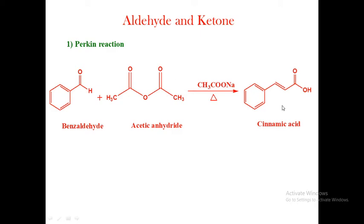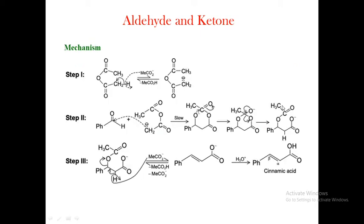This is about the Perkin reaction. Now we see the mechanism of the Perkin reaction. Mechanism means the stepwise description of the reaction. Initially, the ionization of sodium acetate gives the acetate ion, which abstracts the alpha-hydrogen of acetic anhydride to give an intermediate — that is carbanion A. After that, carbanion A attacks the carbonyl carbon of benzaldehyde to give the intermediate carbanion B.